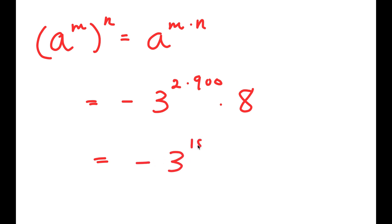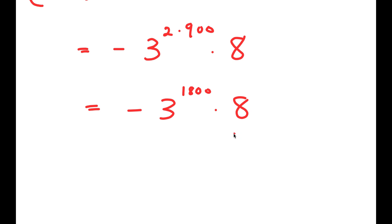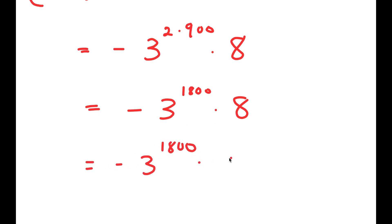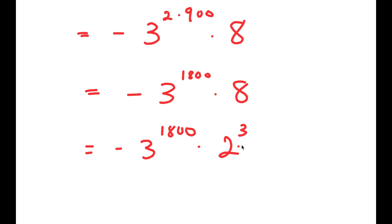So I get negative 3 to the power of 1800 times 8. The final thing I'm going to do is rewrite 8 as 2 to the power of 3 to fully simplify this. So I get negative 3 to the power of 1800 times 2 to the power of 3, and this is my final answer.